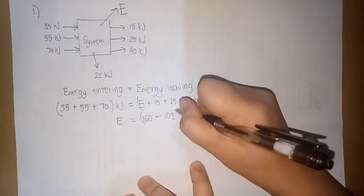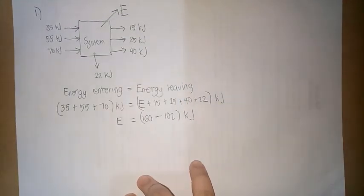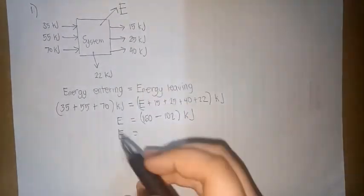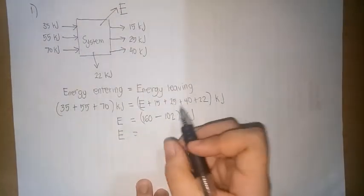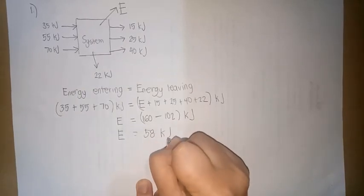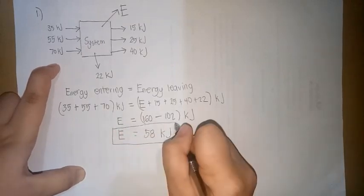Okay, so ang unit nito is kilojoules. Ang kilojoule ay unit ng energy. Okay, so yung fourth energy is 160 minus 102 or 58 kilojoules. Therefore, ang sagot natin sa problem number 1 is 58 kilojoules.